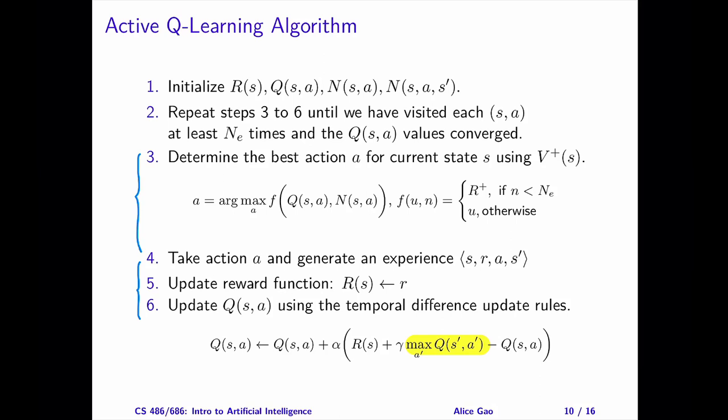The top part of active Q learning is to determine the agent's action given the current state. This part does depend on the current policy that the agent is following. This version uses the optimistic Q values to encourage the agent to explore.